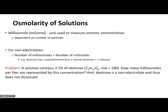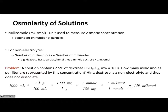Let's do a simple problem. A solution contains 2.5% dextrose with a molecular weight of 180. How many milliosmoles per liter are represented by this concentration? We know dextrose is a non-electrolyte, which will be very important. Since we want milliosmoles per liter, let's start with 1,000 milliliters. The concentration 2.5% is a weight per volume, meaning 2.5 grams per 100 milliliters. Multiplying that out, the milliliters cancel and we know the grams of dextrose.